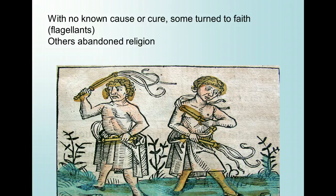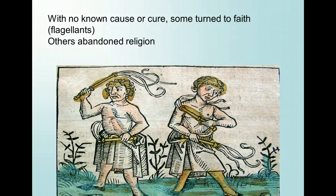In 1348, terrible earthquakes occurred in Italy, compounded with plague and scandals in the church, which intensified in the popular mind the feeling that all things would come to an end. With extraordinary suddenness, the companies of flagellants appeared and rapidly spread across the Alps, through Hungary and Switzerland. In 1349 they had reached Flanders, Holland, Bohemia, Poland, and Denmark. By September of that same year they had arrived in England, where they were met with little success.